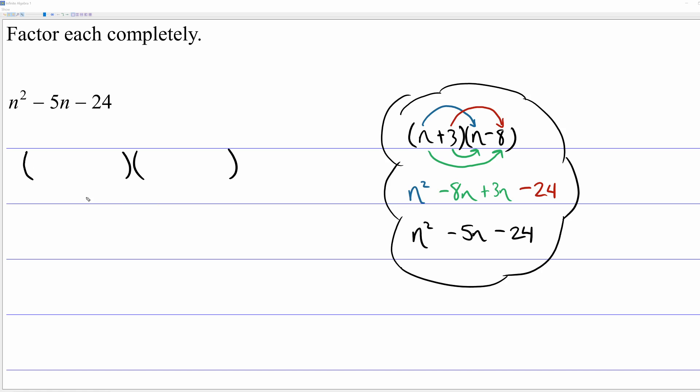So you draw the parenthesis for the two linear binomials. We're going to treat this as a fill in the blank problem. I'm going to color code this. We have the first blank in each linear binomial in blue. These two blanks are going to have to multiply together to give you n squared. And then in red, the second two blanks multiply together to give you negative 24.